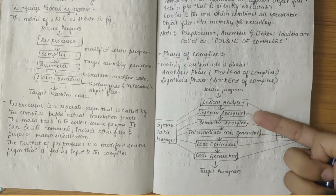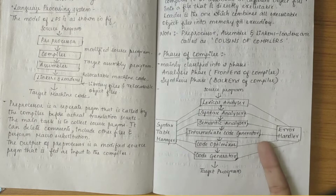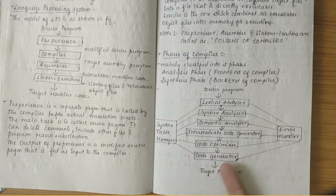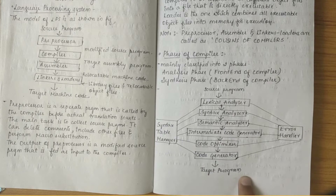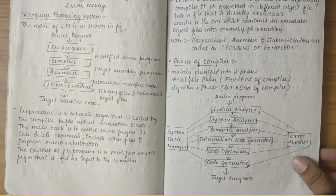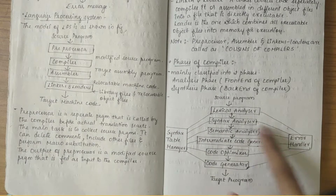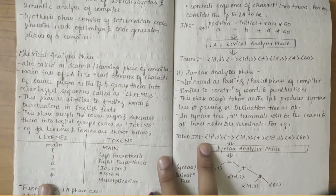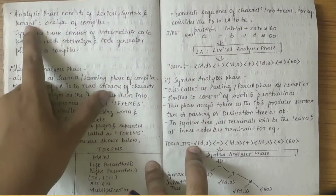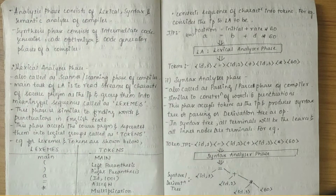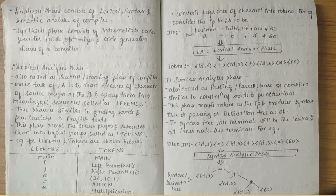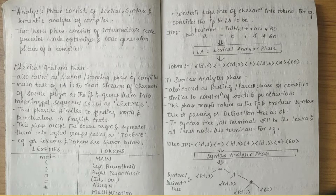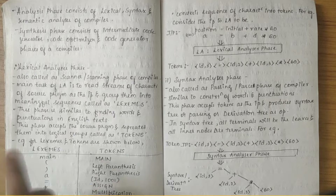The steps or diagram for phases of compiler starts from the lexical analyzer, syntax analyzer, semantic analyzer, intermediate code generator, code optimizer, and then code generator, and the final output is the target program. We also have a symbol table manager and an error handler. The analysis phase consists of lexical, syntax, and semantic analyzer, while the synthesis phase comprises the intermediate code generator, code optimizer, and code generator.